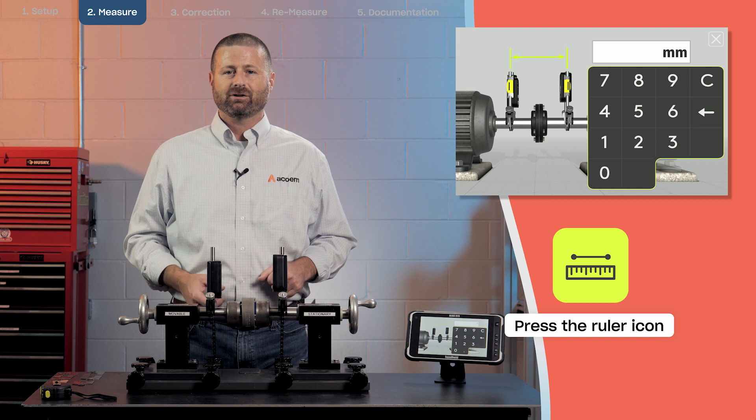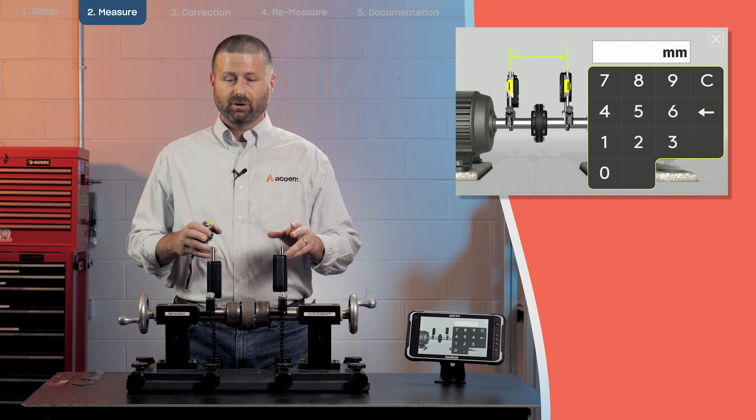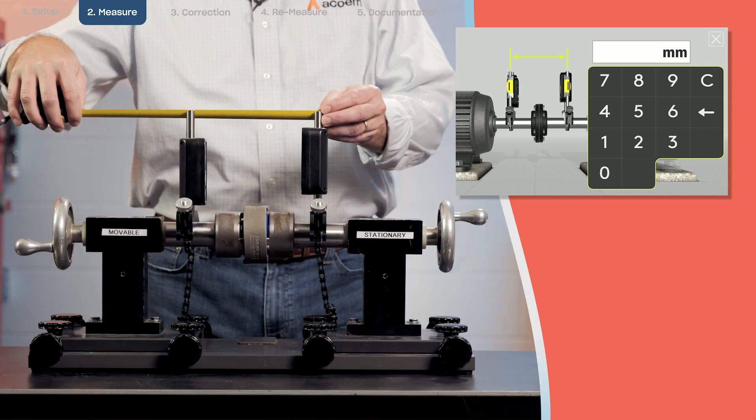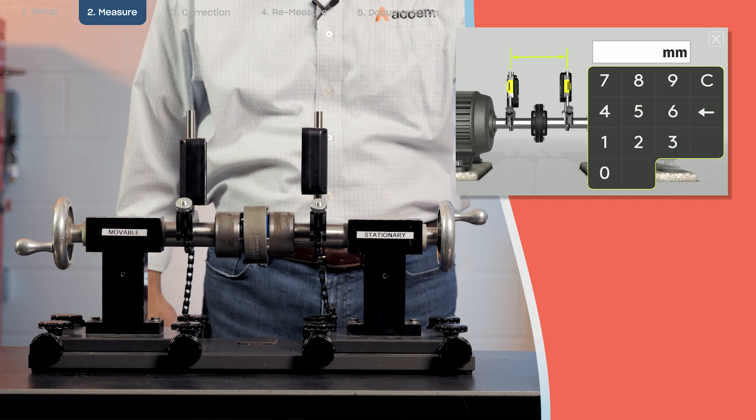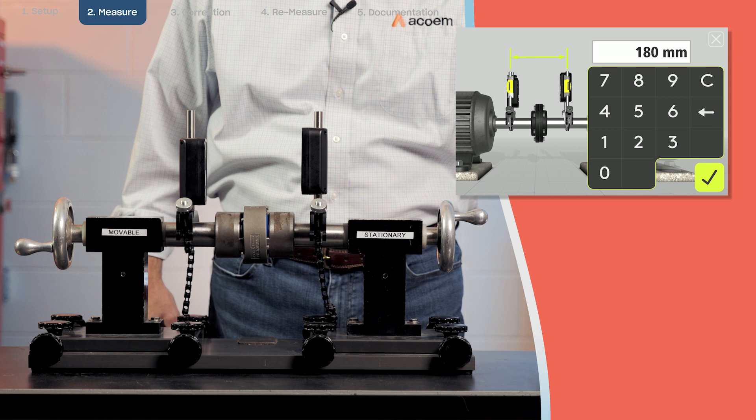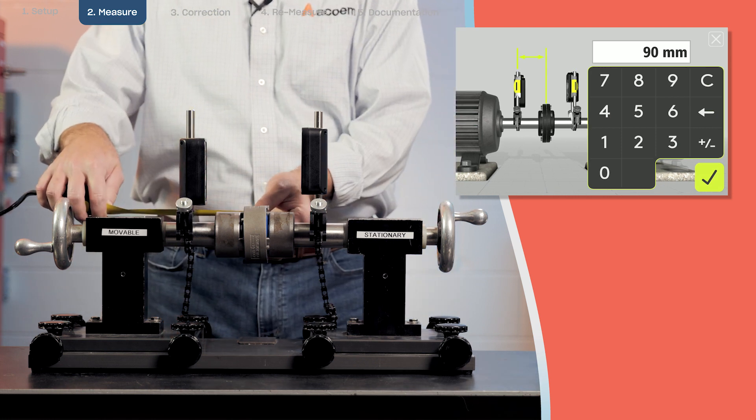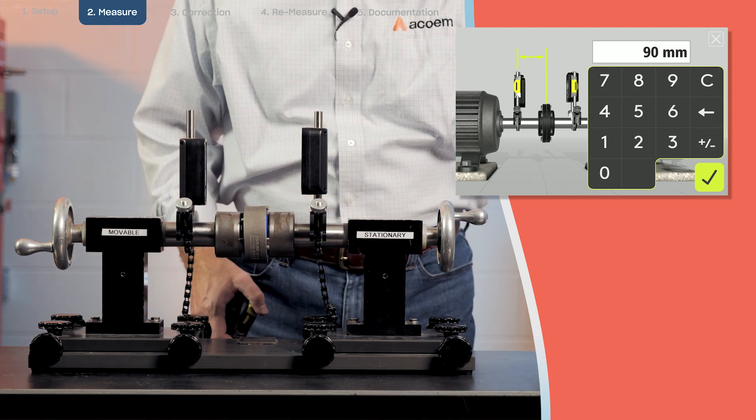Next step is going to be to enter the dimensions of the machine. First the M sensor to the center of the coupling. Half of that distance is 90 millimeters.